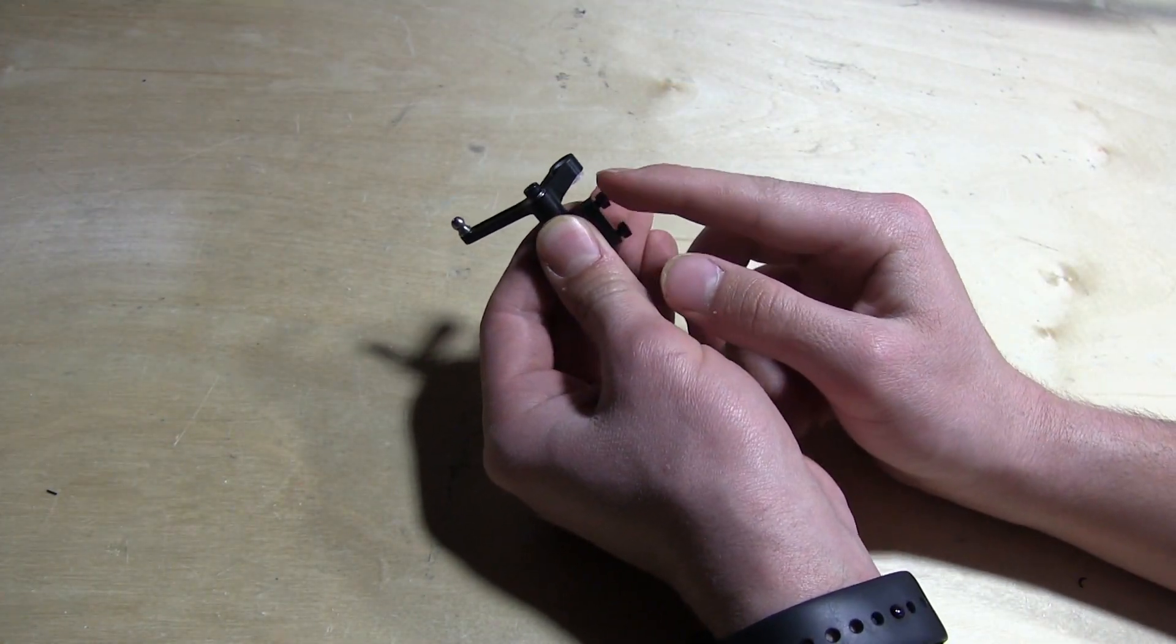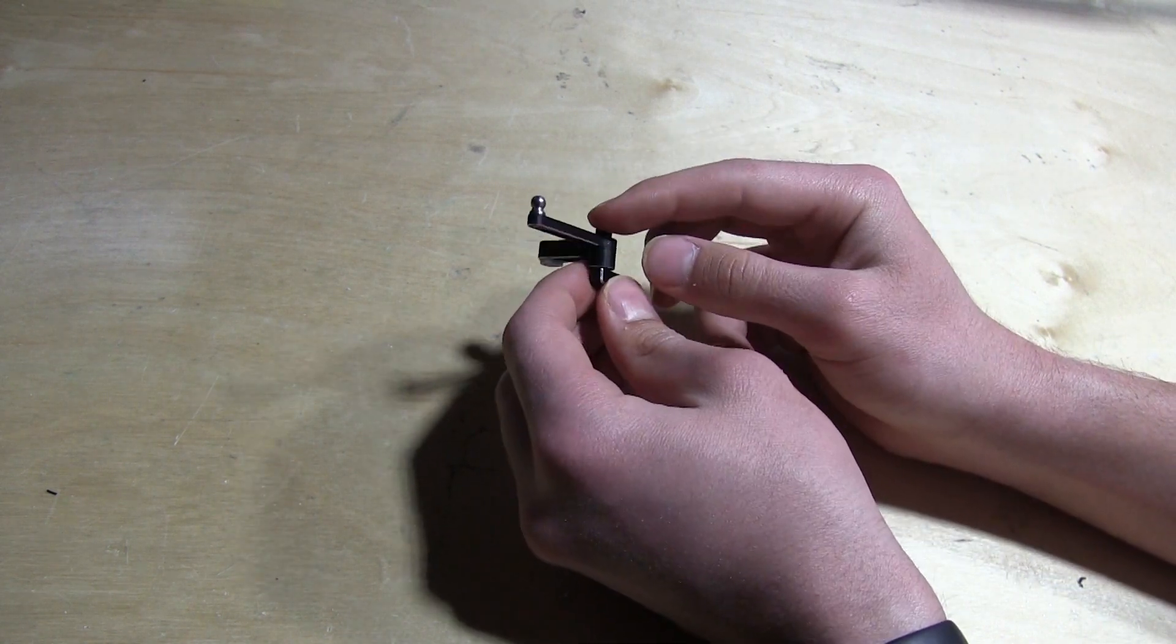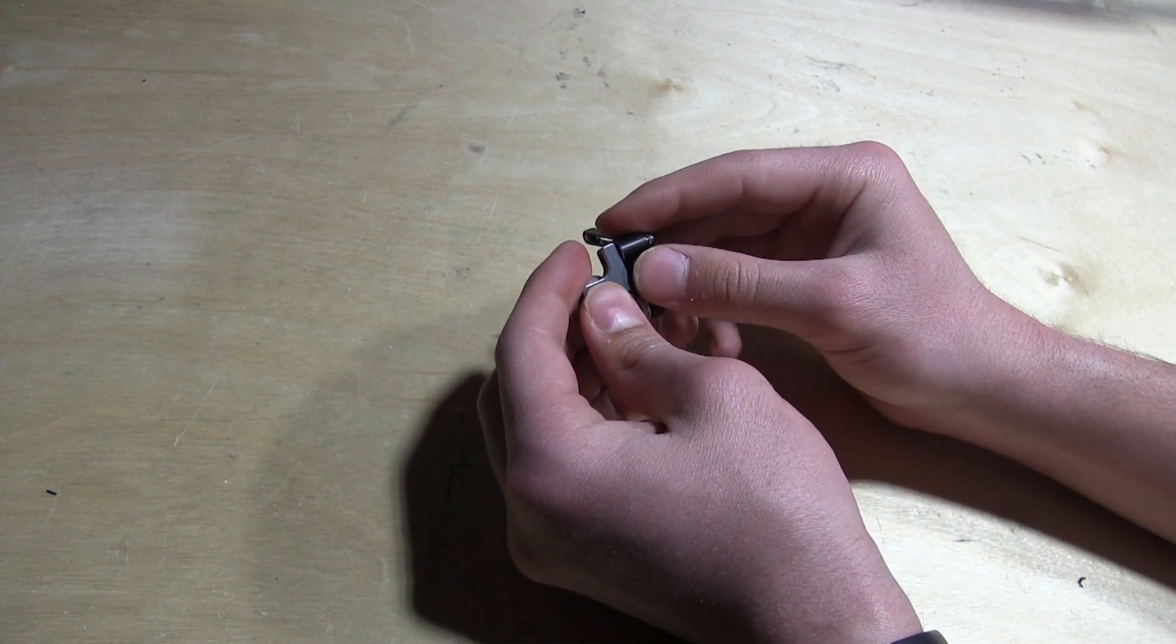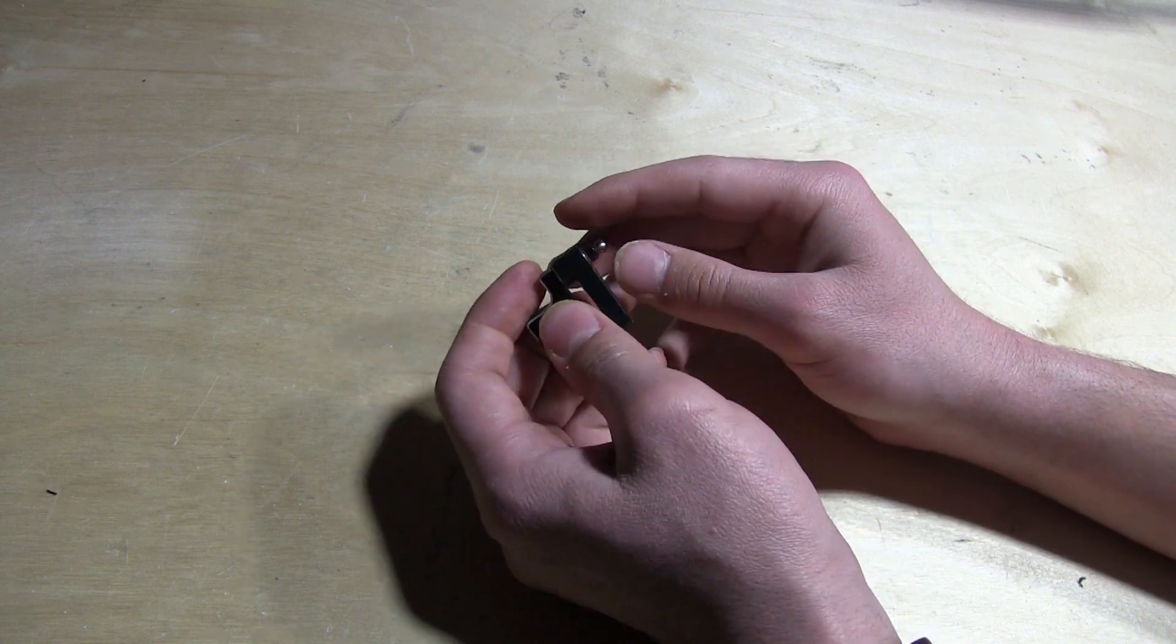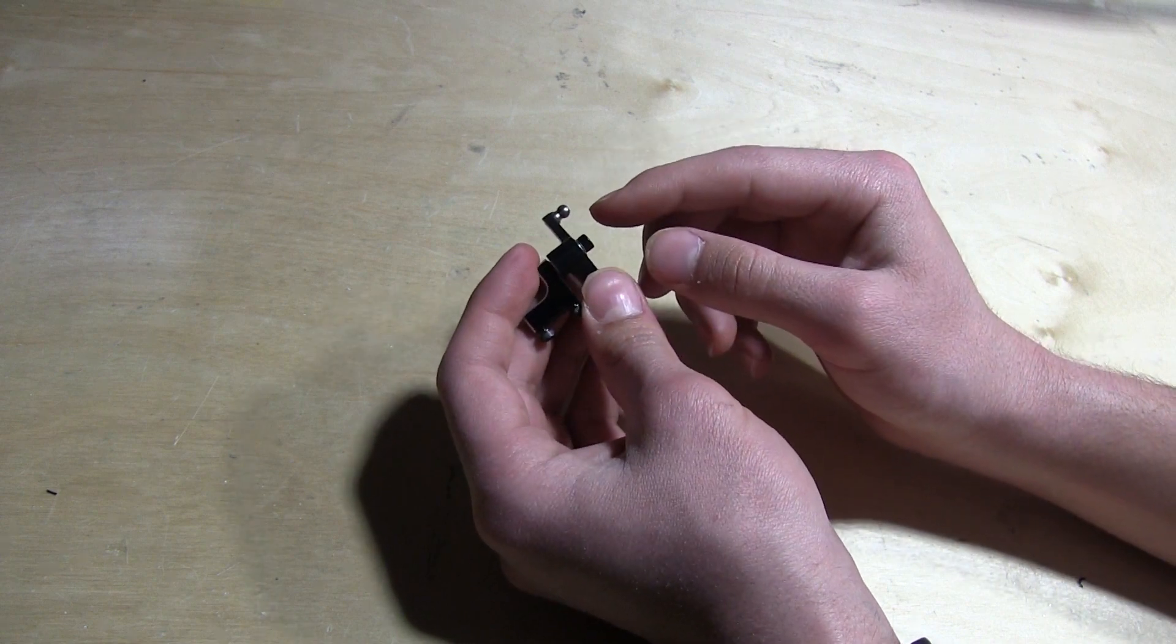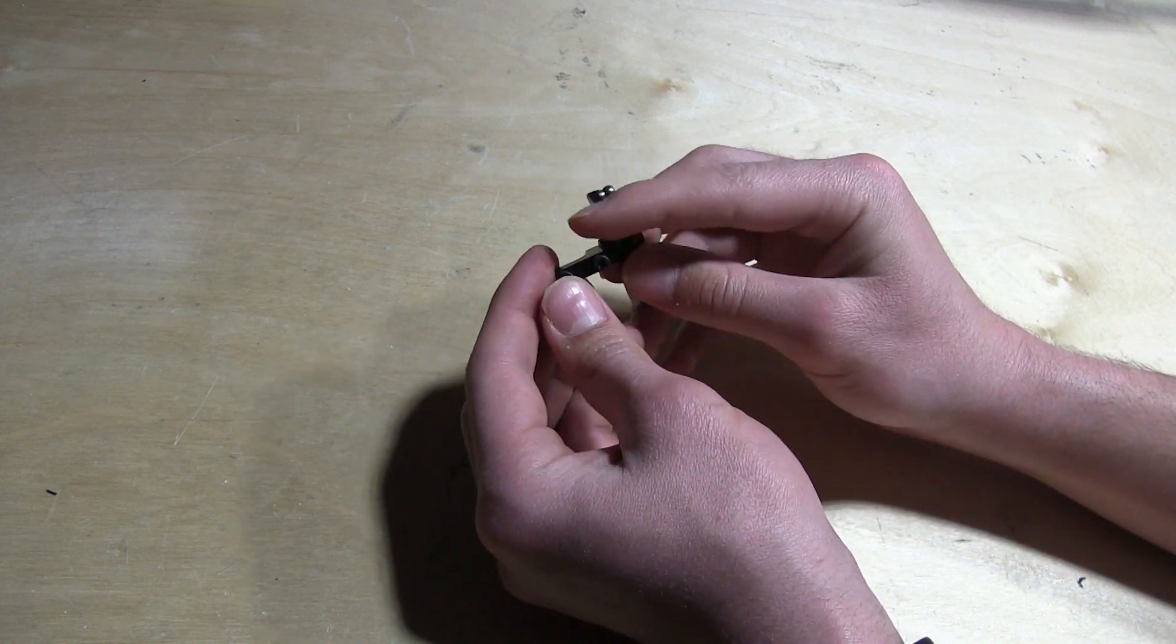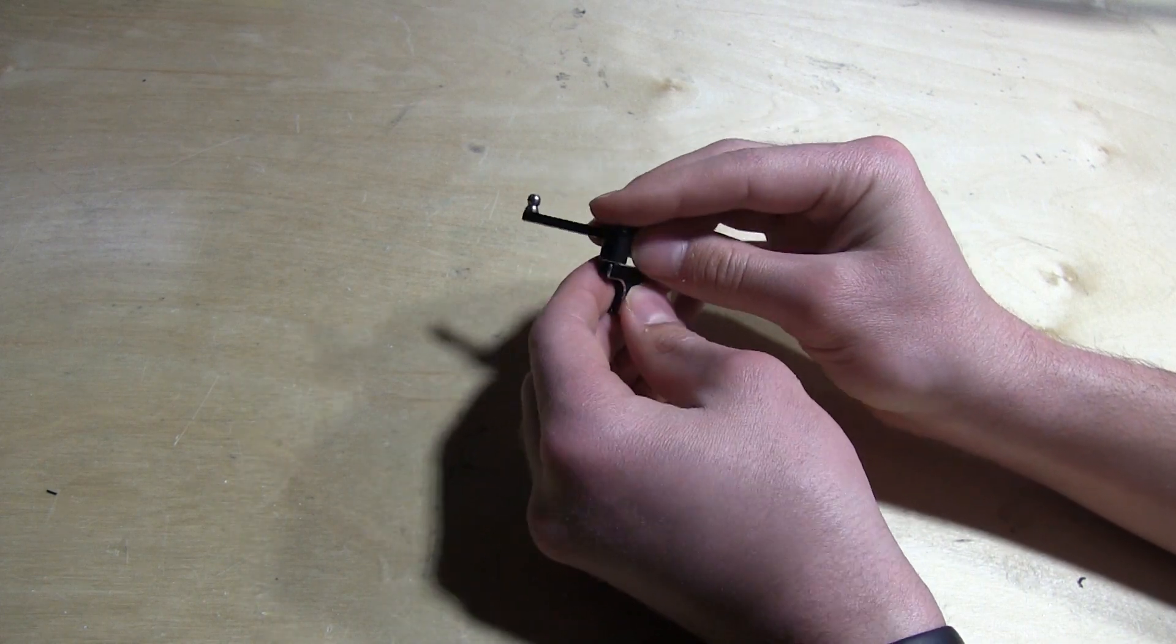Taking a look at the bell crank, these two screws right here are going to be used to install the actual crank to the tail plate. This screw right here holds the crank onto the mount, and this ball link attaches to the tail control rod. Make sure that these two are Loctited in this step, and these will be Loctited later to install the mount to the actual plate.